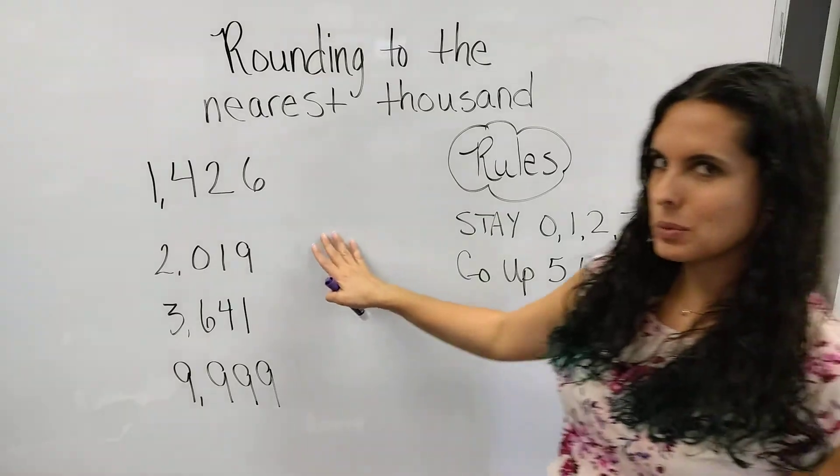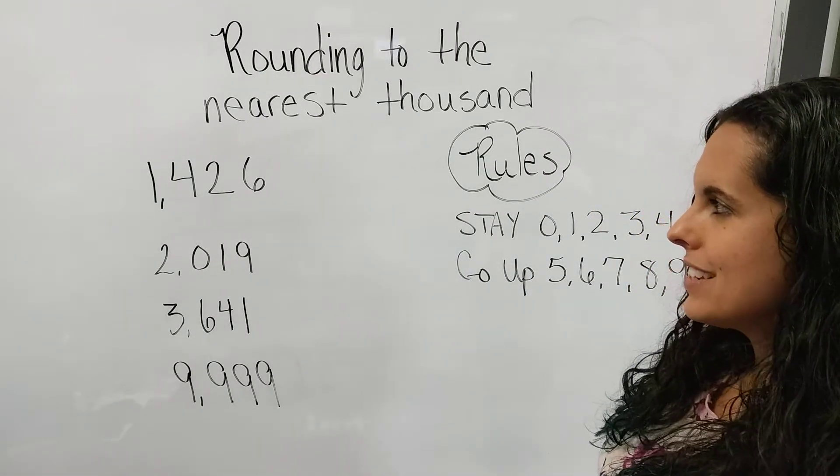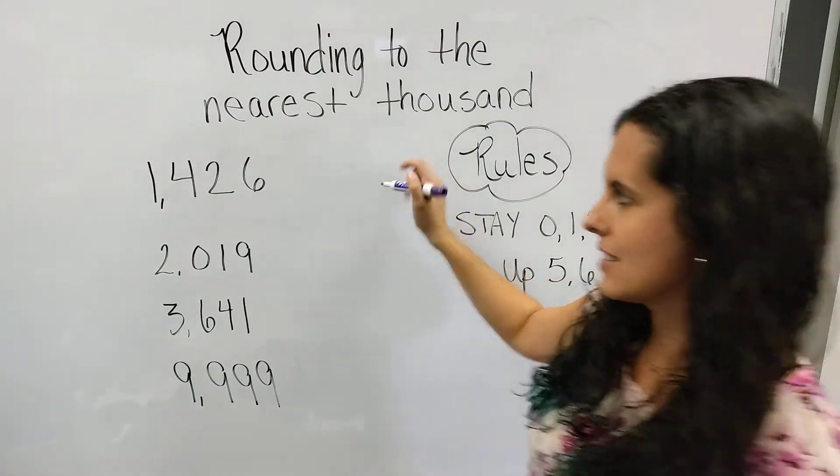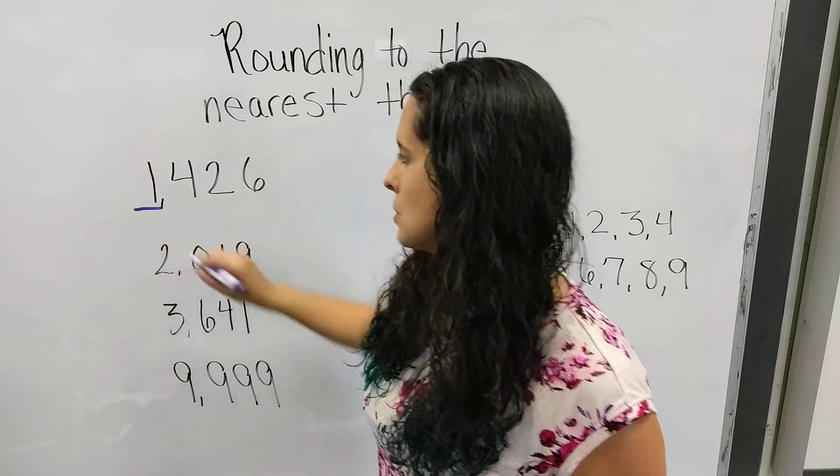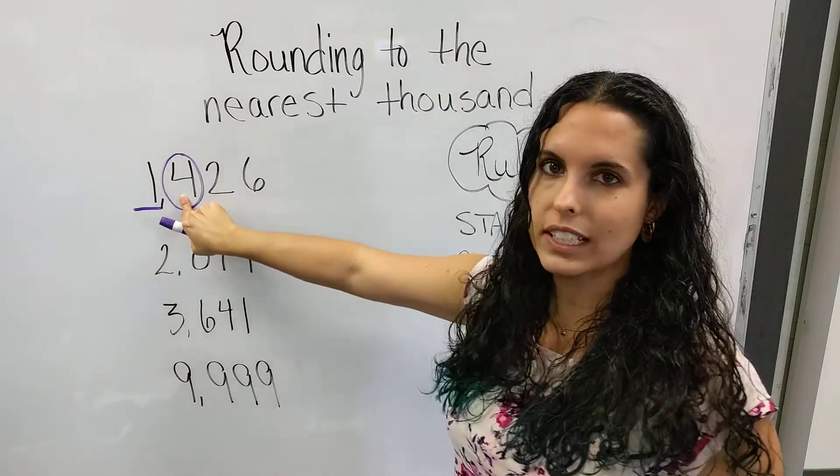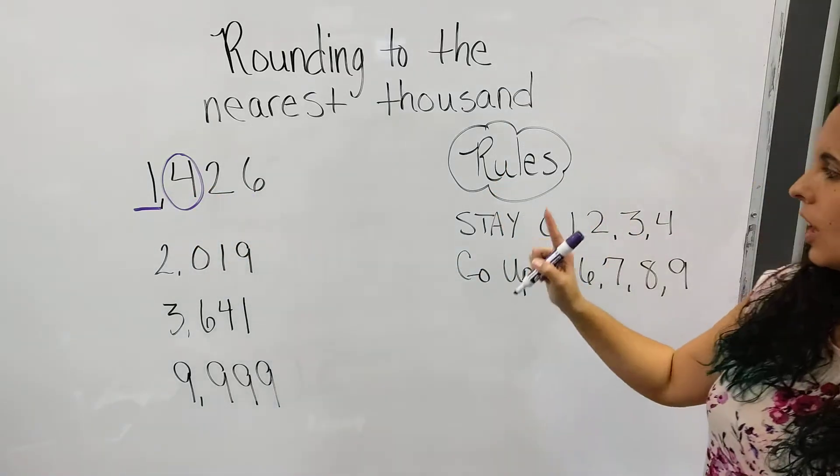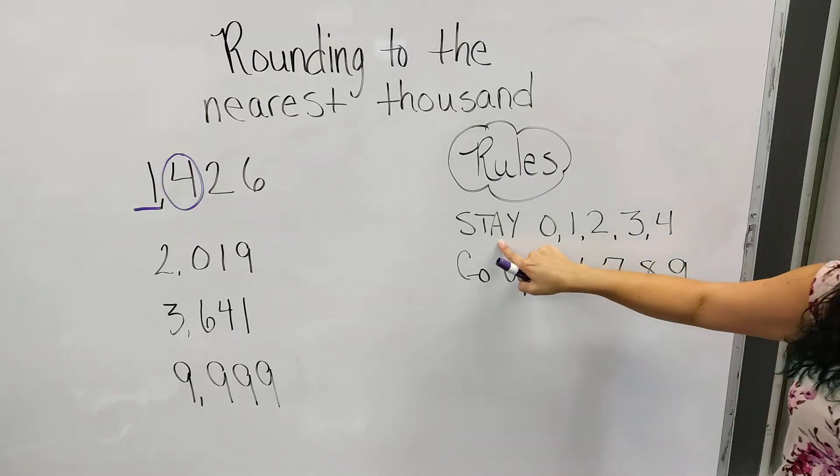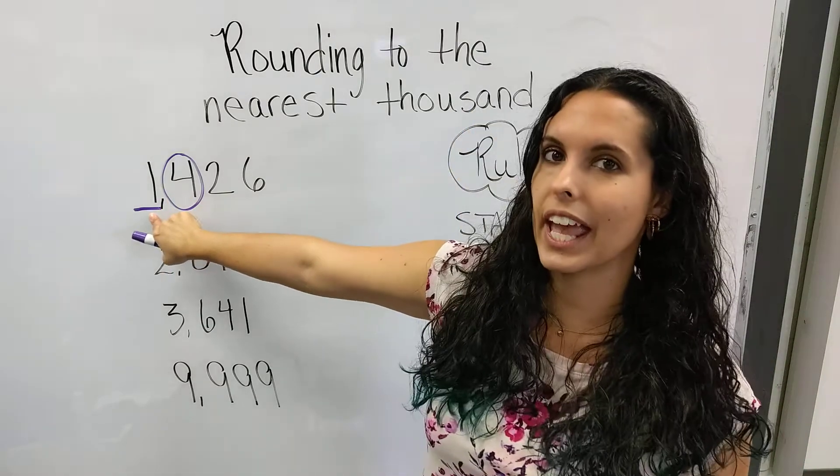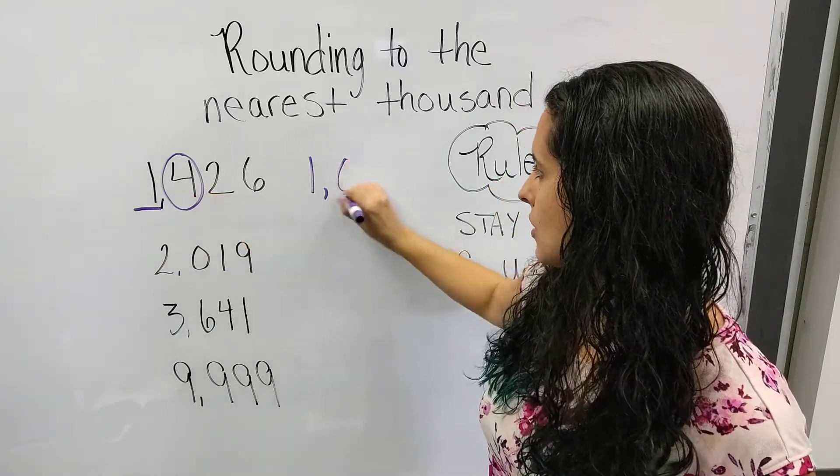So here's some examples we're going to practice. We have 1,426. Since we're rounding to the nearest thousand, we want to underline the thousands place. The 1 is in the thousands place. We're going to circle the number behind it. This is called your bossy number. Now we look at this number and check it against our rounding rules. A 4 says stay. So it's going to tell this 1 to stay a 1, and all these other numbers go to zeros.